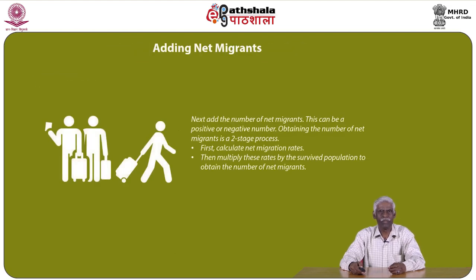The other major segment is to add the net migrants, which can be a positive or negative number. Obtaining the number of net migrants is a two-stage process: first calculate net migration rates, then multiply these rates by the survived population to obtain the number of net migrants.